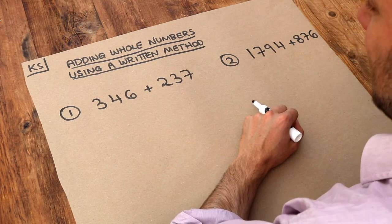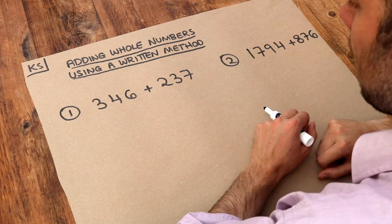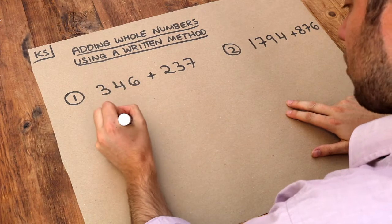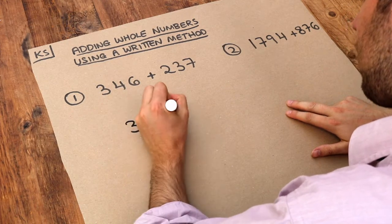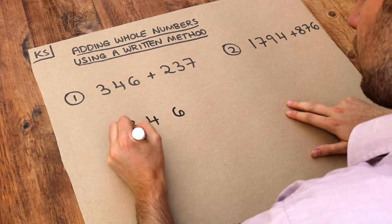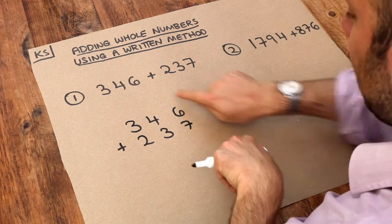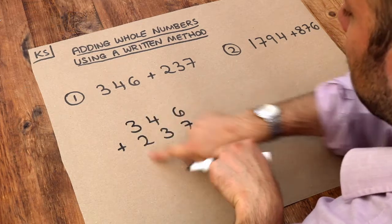And what we're going to use is a technique known as column addition. That means we're just going to write each number one row to itself. So 346 plus 237. And what it means to have column addition is that each column represents a place value.